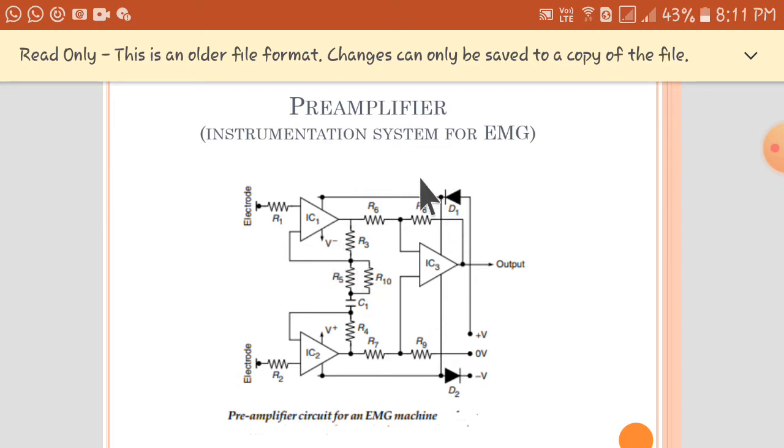The second stage of the amplifier is a differential amplifier. This differential amplifier provides high differential signal gain and rejects common mode signals. The overall gain of the amplifier is 1000.